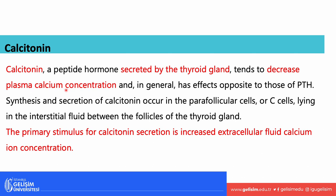Calcitonin has the opposite effect. Its secretion is stimulated by increased extracellular fluid calcium ion concentration — when we have high concentrations of calcium. Calcitonin is a peptide hormone secreted by the thyroid gland, and it decreases blood calcium concentrations. Calcitonin is produced by the parafollicular cells, also called C cells, situated in the interstitial fluids between the follicles of the thyroid glands.